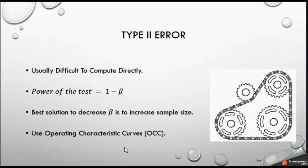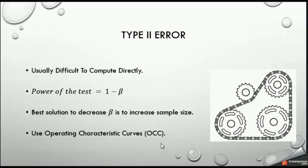We need a lot of calculation and consideration. We also have the term 'power of the test,' which is 1 minus beta. The power of the test is the probability to reject the null hypothesis when we should reject it. We should have the power of the test as large as possible. The best solution to decrease beta is to increase the sample size — increasing the sample size reduces beta and increases the power of the test. To figure out how to increase the sample size, we use what is called the Operating Characteristic Curves, or OCC.